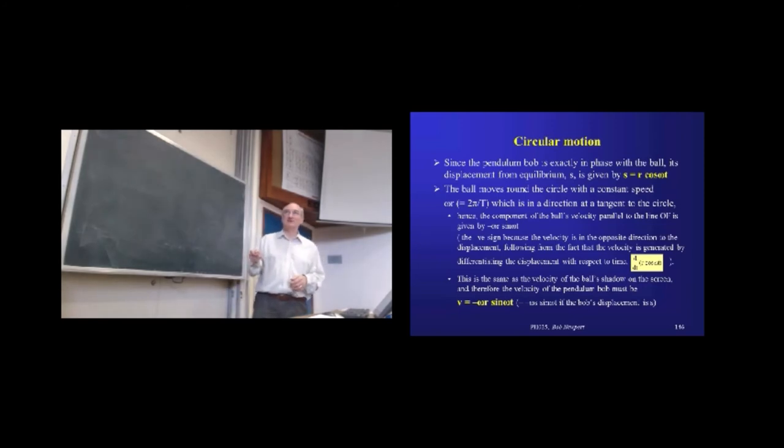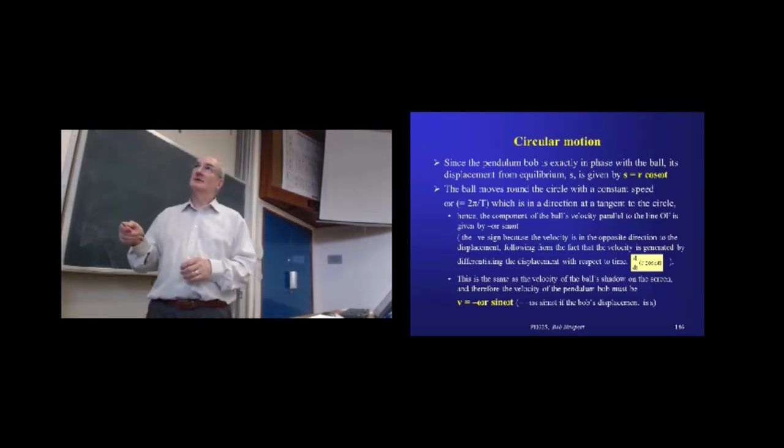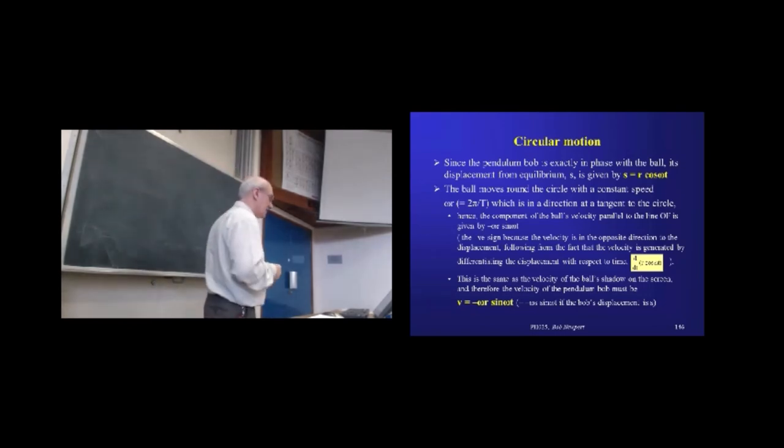There's some constants in there. ω and r are both constants. But, nevertheless, it's giving us the velocity. Now, notice the minus sign. The minus sign is important. And it comes because of our choice of what is positive and what is negative.